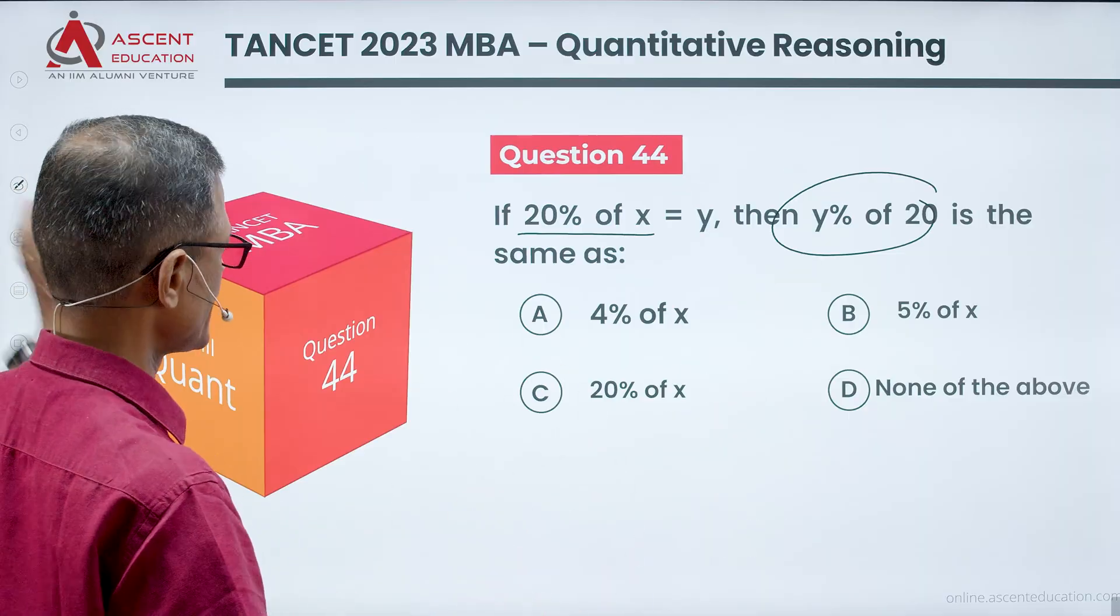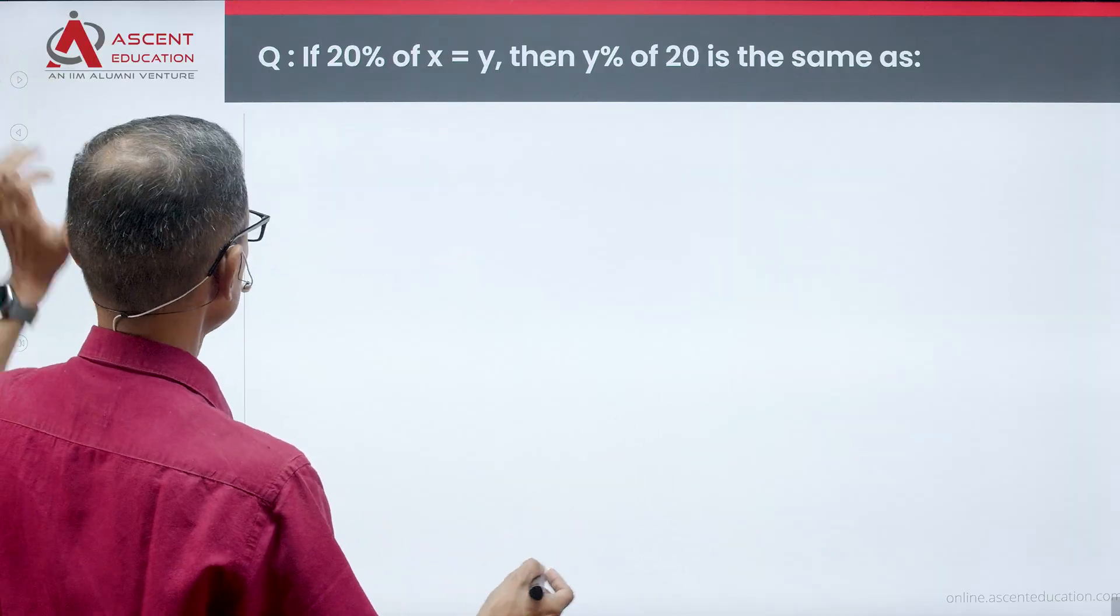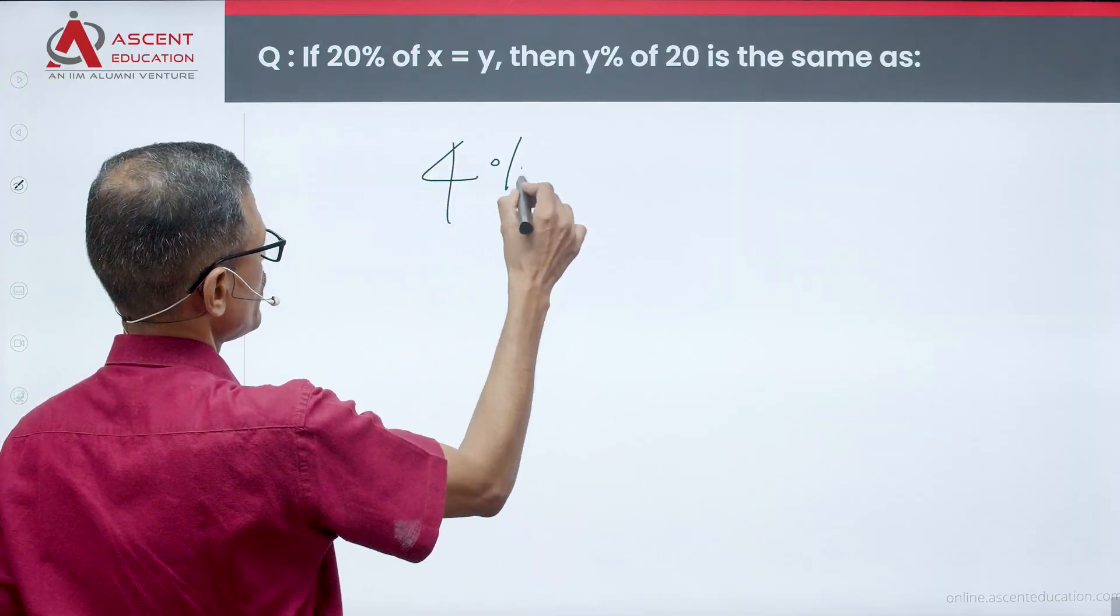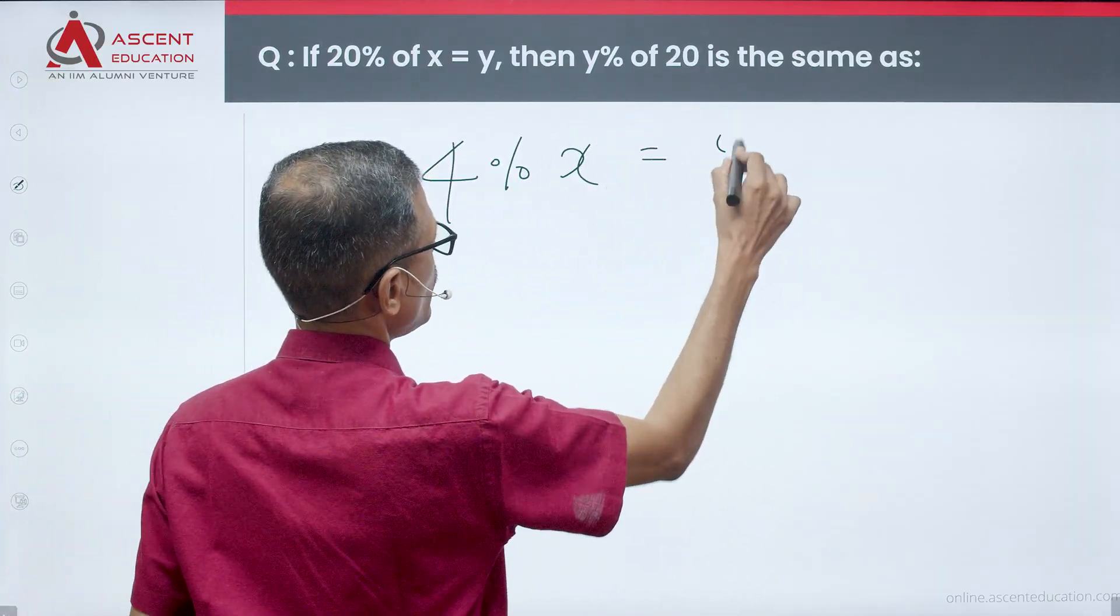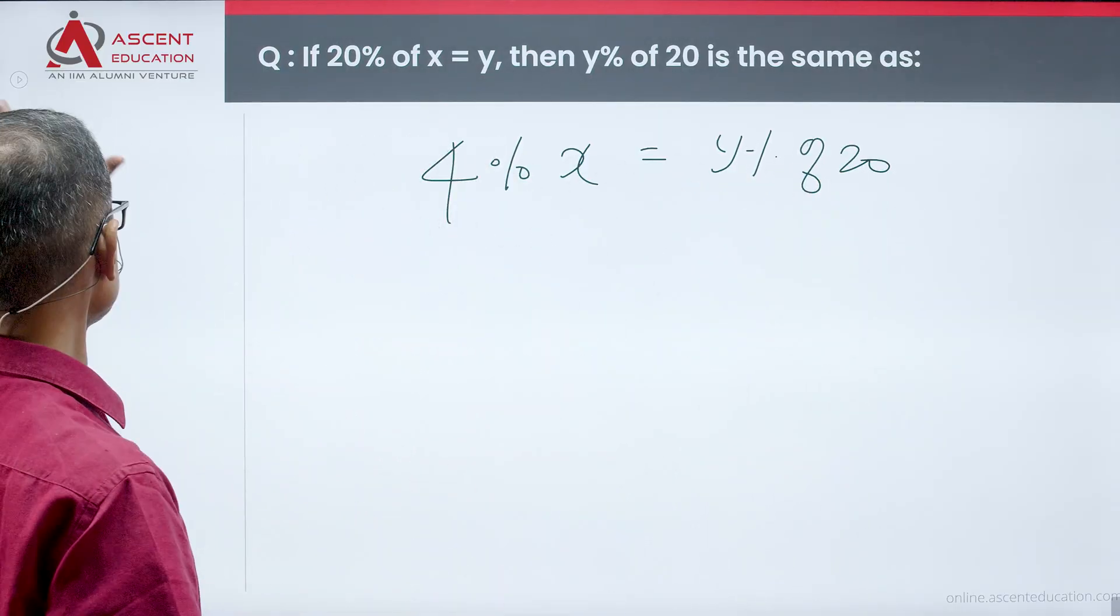Answer option A is the answer. 4/100 is what? 4%. 4% of x is what this y% of 20 will be equal to. Choice A is the correct answer to this question.